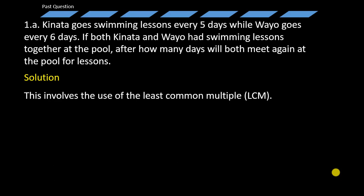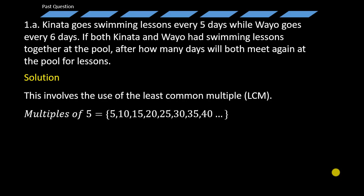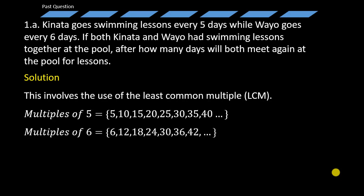Let's start with the multiples of five. The multiples of five are simply 5, 10, 15, 20, 25, 30, 35, 40 and so on and so forth. And then the multiples of six are 6, 12, 18, 24, 30, 36, 42 and so on and so forth.